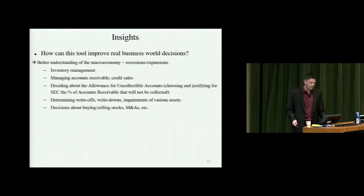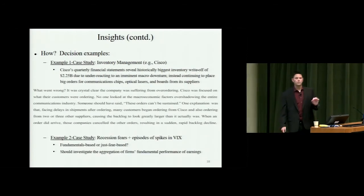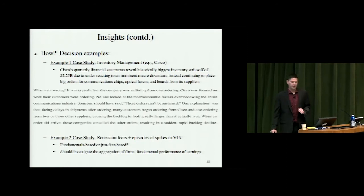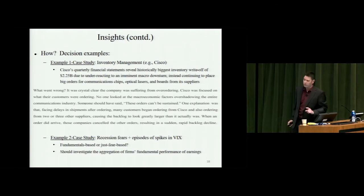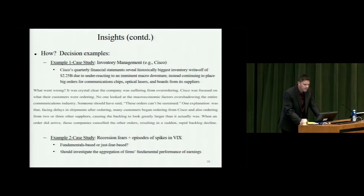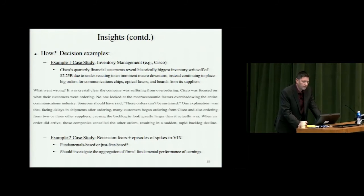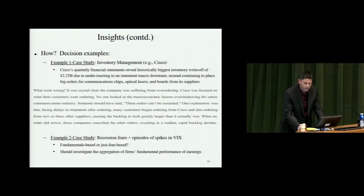Here is a case study on inventory management. Cisco's quarterly financial statements revealed a historically large inventory write-off of $2.25 billion due to underreacting to an imminent macro downturn — they continued placing big orders for communications chips, optical lasers, and boards from suppliers. Better understanding of future macroeconomic activity can help prevent this kind of inventory mismanagement.